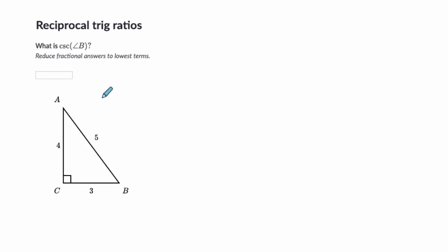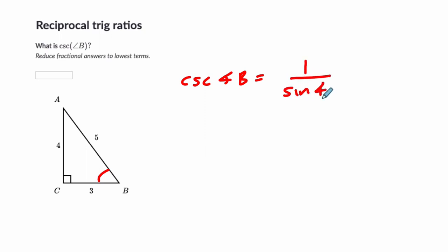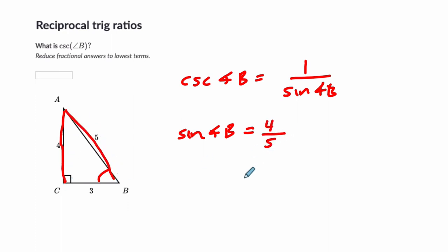Finally, we have the cosecant of angle B. Notice they're shifting to this angle's perspective. The cosecant of angle B is 1 over the sine of angle B. I like to find the sine first: sine of angle B is opposite 4 over hypotenuse 5, so it's 4 fifths. The cosecant of that angle is its reciprocal, which equals 5 over 4. And that's our answer. Alright, hope that helped!